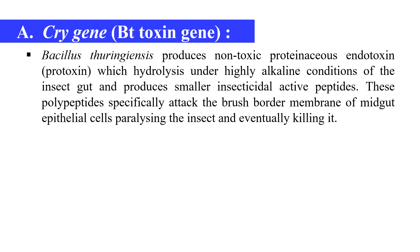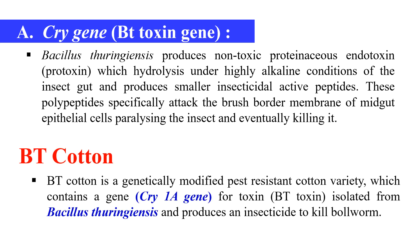By using these cry genes, we can develop insect resistance plants. An example is Bt cotton, a crop which is resistant against the bollworm. When the bollworm tries to feed on Bt cotton, it eventually gets killed, because Bt cotton expresses the cry1A gene that makes the toxin. When the bollworm eats the cotton, that toxin moves inside the gut of the bollworm, and due to the alkaline condition, it is converted into the active toxin and ultimately kills the bollworm.